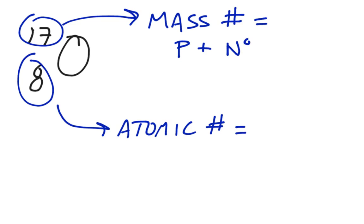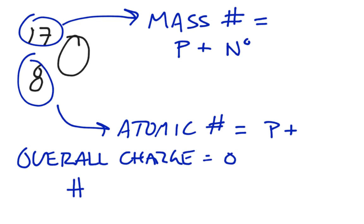The atomic number equals the number of protons. Because all atoms are electrically neutral, so the overall charge is zero, the number of protons in an atom is equal to the number of electrons in an atom.